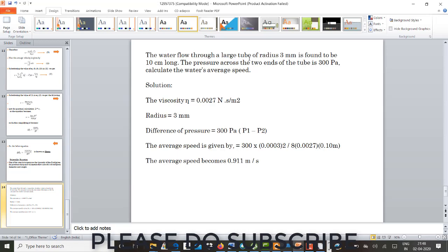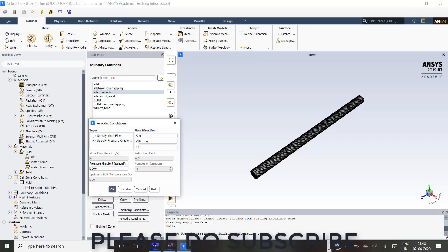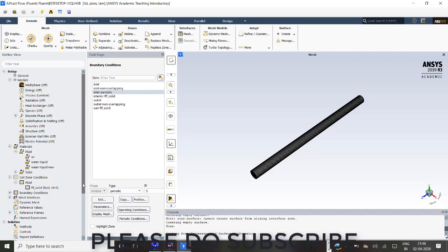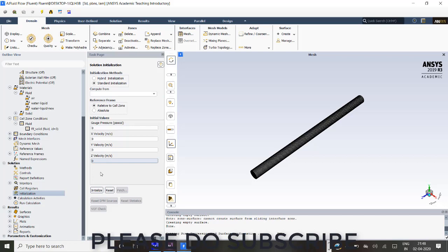I have given a pressure gradient of 3000 Pascal per meter, because as shown in the presentation it is 300 Pascal and that is for 10 centimeters. So for 1 meter it is 3000 Pascal per meter. After that I have initialized hybrid initialization. I have initialized.